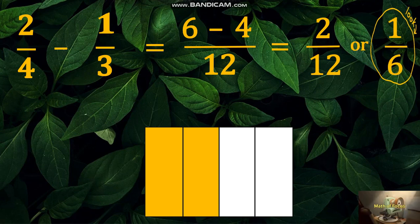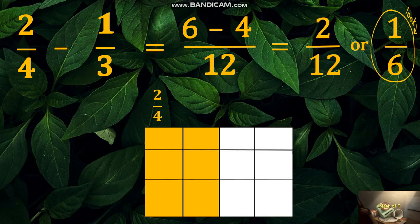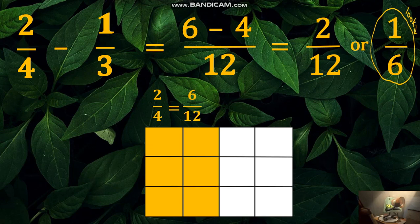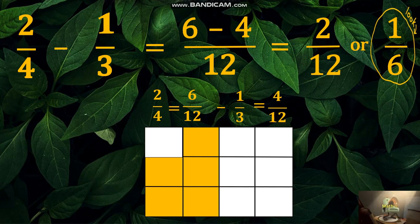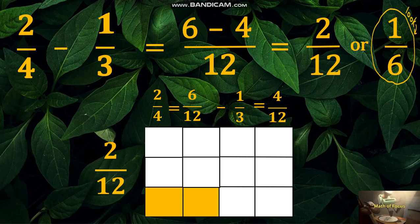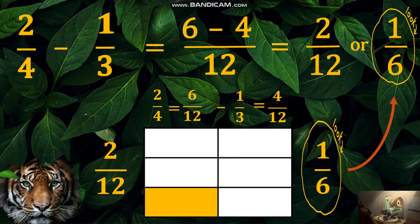To visualize it: changing two fourths to a similar fraction by adding partitions to make twelve equal parts gives six twelfths, and one third will become four twelfths. Taking away four twelfths from six twelfths through the diagram shows two twelfths. Changing to the lowest term by removing partitions shows one sixth.